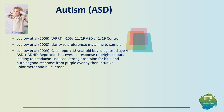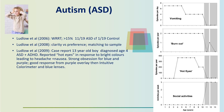She reported a case study of a 13-year-old boy diagnosed at age 4 with ASD and ADHD. He reported hot eyes in response to bright colours leading to headache and nausea, had a strong obsession for blue and purple, and showed a good response from a purple overlay and then the Intuitive Colorimeter's blue lenses. The effect of the lenses was dramatic: vomiting was eliminated, burnout was eliminated but returned when the glasses were broken, the periods of hot eyes were reduced, and there was an increase in social activities as a result of the lenses.